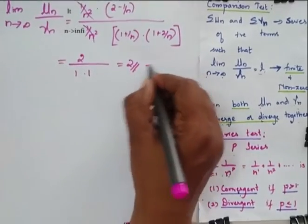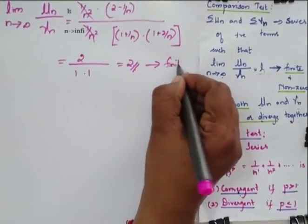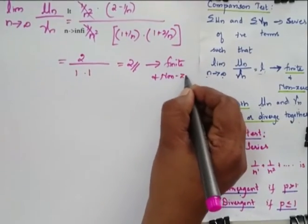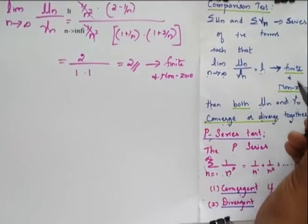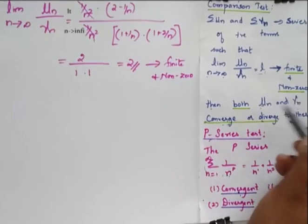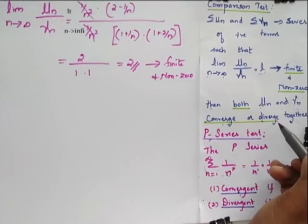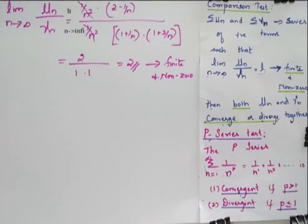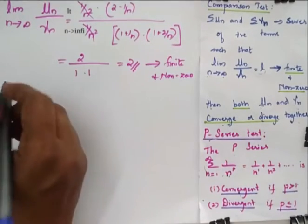So this 2 which I have obtained is finite and non-zero. So when I say that it is finite and non-zero, un and vn converge or diverge together. So in order to find this, I go for my p-series test.